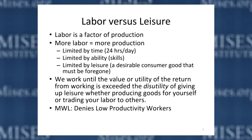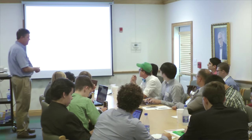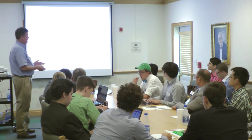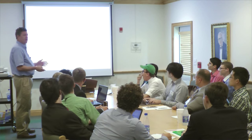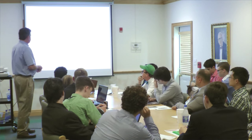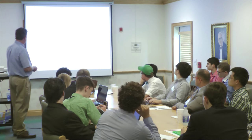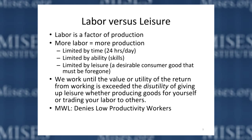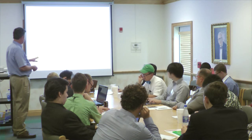In Austrian economics, we work until the value or utility of the return from working is exceeded by the disutility of giving up leisure. We're constantly weighing what we get from labor versus the satisfaction we get from leisure. Some people like leisure a lot, and other people prefer to work hard most of the time. What the minimum wage law does is it denies low-productivity workers the chance for a job. The people with the lowest productivity tend to be without skills, without job experience, and maybe with handicaps of various sorts.